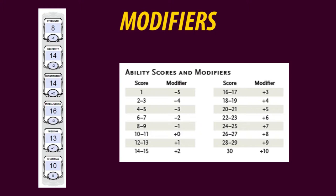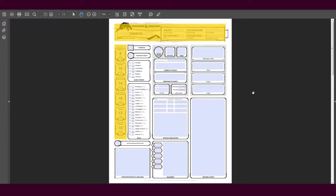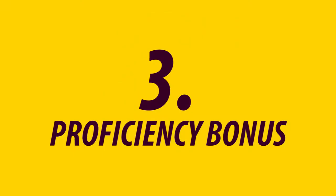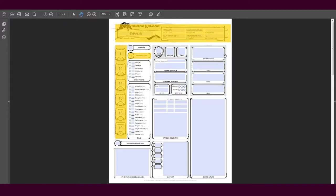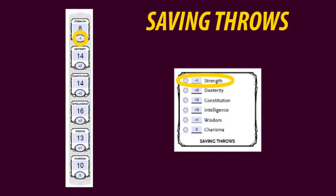He looks quite balanced and average, to be honest, and must have a pretty plain personality. A character of level 1 has a proficiency bonus of +2. Filling in the blanks on saving throws is simple — you just transfer over the modifiers of each ability. If your strength modifier is −1, then your saving throw is −1 on strength.